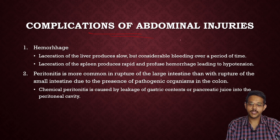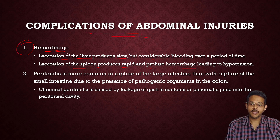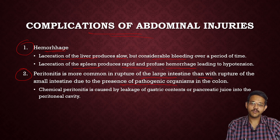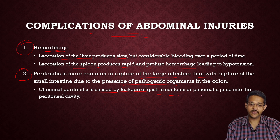Complications of abdominal injuries: the commonest complication is hemorrhage. Laceration of the liver produces slow but considerable bleeding over time leading to death. Laceration of the spleen produces rapid and profuse hemorrhage leading to hypovolemic shock. Next complication is peritonitis, which is more common with rupture of the large intestine than the small intestine, since pathogenic organisms are present in the colon. Chemical peritonitis is caused by leakage of gastric contents including acids and pancreatic enzymes, which can damage surrounding tissues.